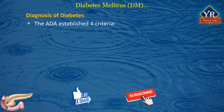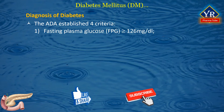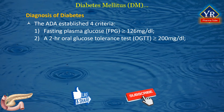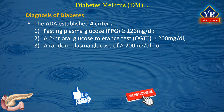Regarding diagnosis of diabetes, the American Diabetes Association has established four criteria. Number one, a fasting plasma glucose greater than or equal to 126 mg per dl. Number three, in patients with symptoms of hyperglycemia — that is polyphagia, polyuria, polydipsia, and weight loss — a random plasma glucose of greater than or equal to 200 mg per dl; or number four, hemoglobin A1c (HbA1c) of greater than or equal to 6.5 percent.